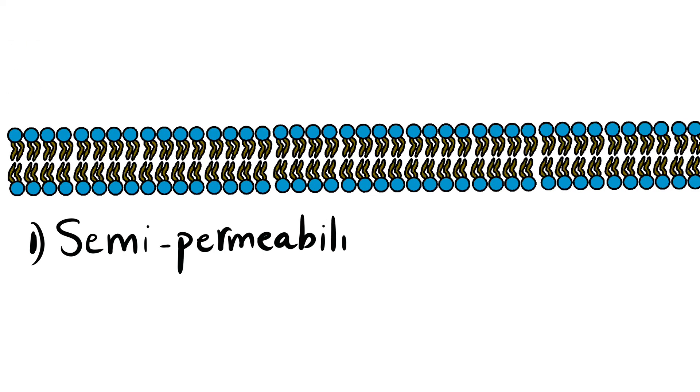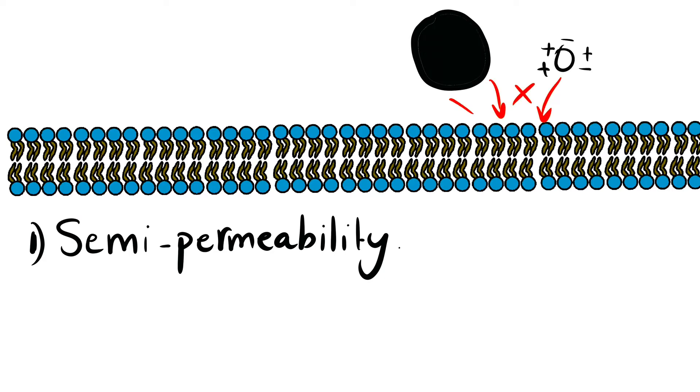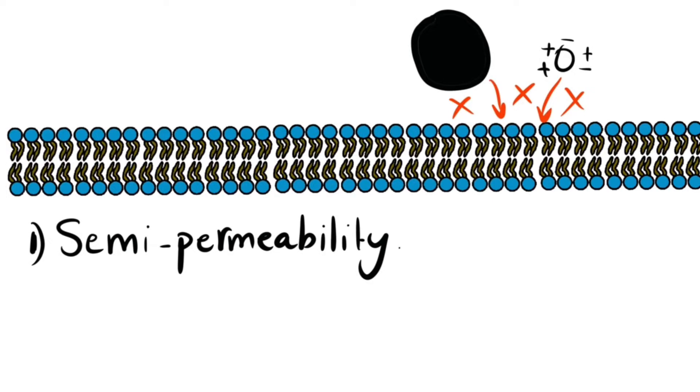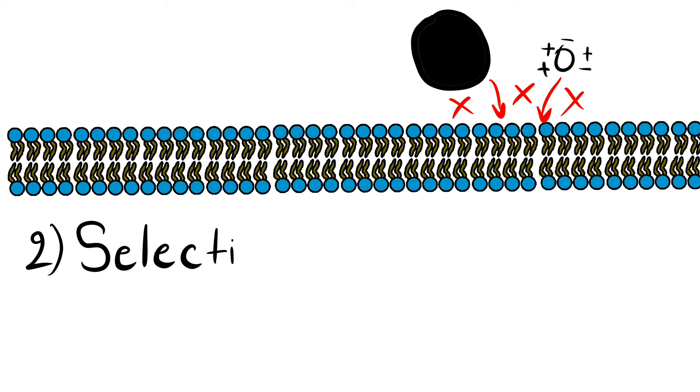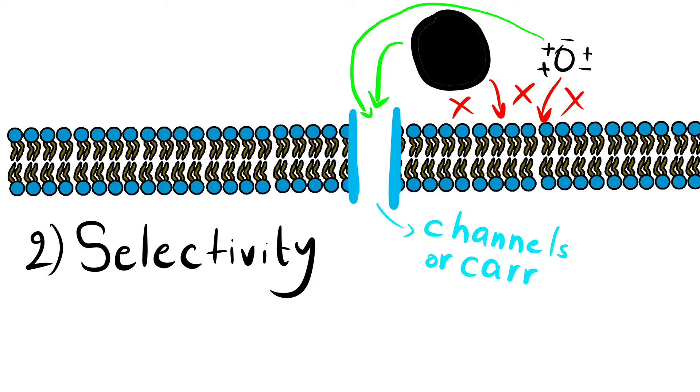Cell membranes have two key characteristics. Semi-permeability, where only certain materials may freely cross. Large and charged substances are typically blocked. And the second one is selectivity, where membrane proteins regulate the passage of material that can't freely cross. These membrane proteins are called transporters.